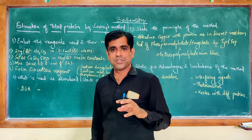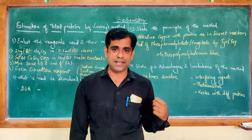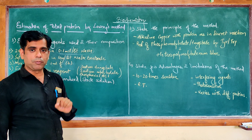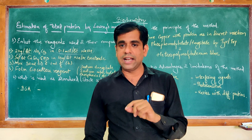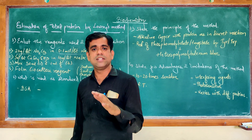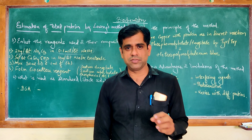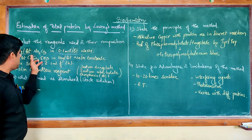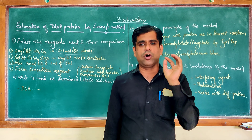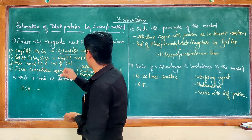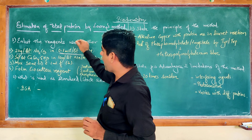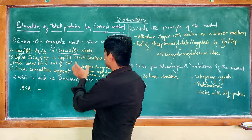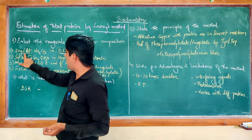Let us go to the questions which you may be asked in the viva for these practicals. The first question asks you to list the reagents used in Lowry's method and their composition. We prepare two reagents: one is the alkaline copper sulfate reagent, and the other is the Folin-Ciocalteau reagent, which is a commercial preparation available in the market. For the alkaline copper sulfate reagent, you take 20 grams per liter of sodium carbonate in 0.1 mol per liter of NaOH.